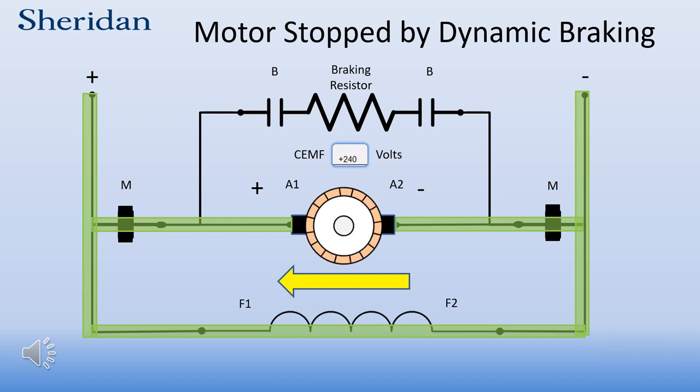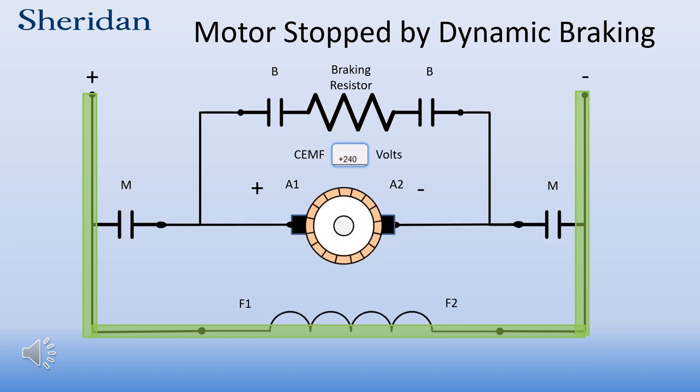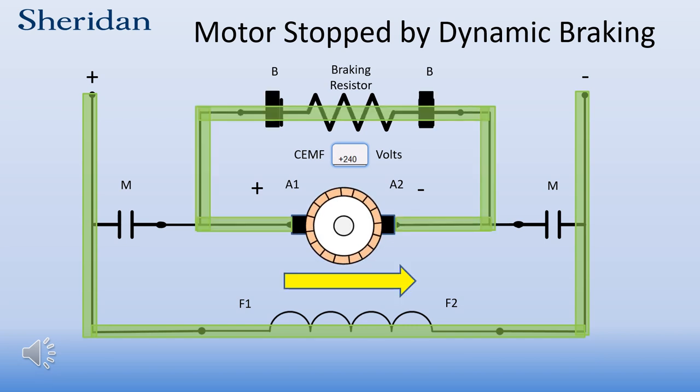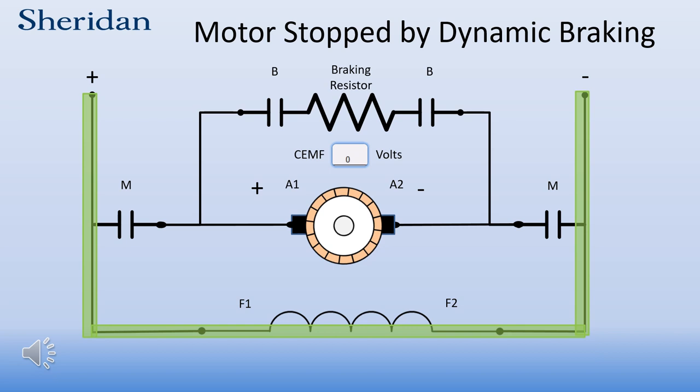With the braking resistor and braking relay contacts installed, when it comes time to stop the motor, the M contacts will open. The armature is still generating a voltage — which was counter-EMF — because it is spinning in the still energized shunt field. When the B contacts close, the resistor is now across the armature. The polarity of the generated voltage is shown near A1 and A2. The armature is now a source of voltage feeding power to the braking resistor. The current now flows in the opposite direction, which causes a torque in the opposite direction that it's turning, and this counter-torque stops the motor quickly.